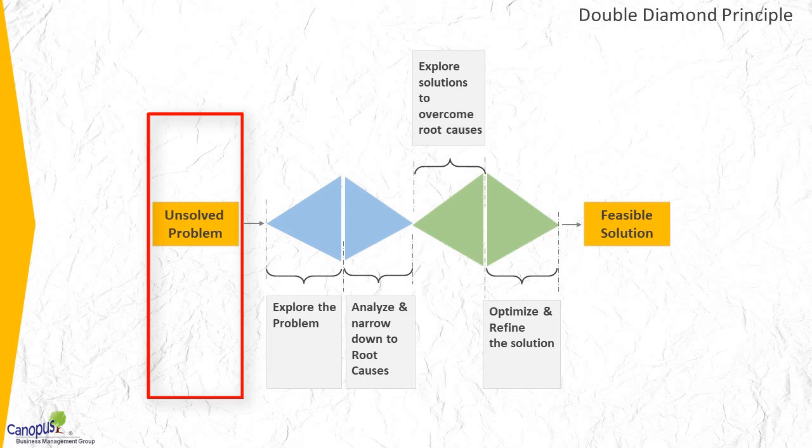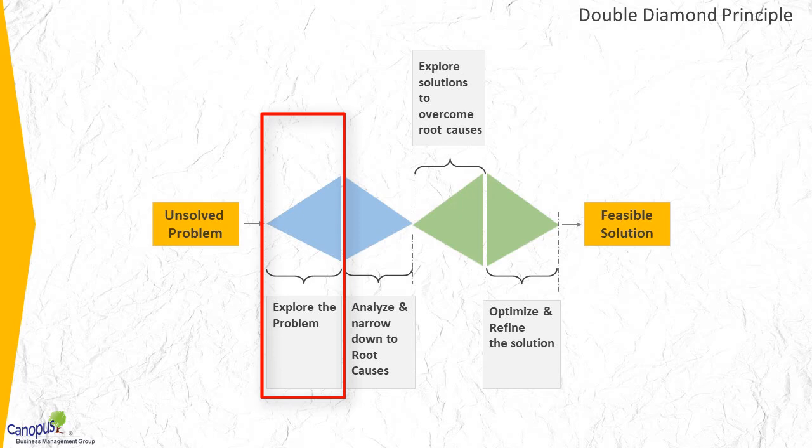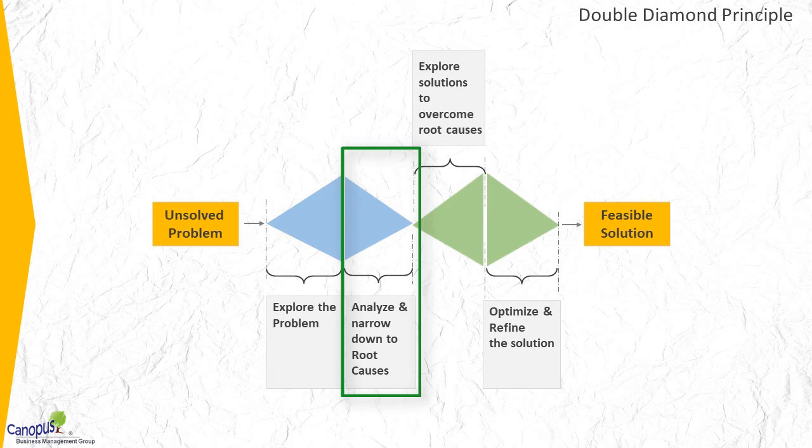We start with an unsolved problem. Here our focus is to define the problem, its scope, understand its impact on the business, etc. The next thing for us to do is to brainstorm and identify all possible reasons. We can use tools like the fishbone diagram or brainstorming tools which are widely used, like focus group discussions, interviews with customers, and a variety of other things to identify all possible reasons. Once we have identified all possible reasons, we use data or facts to filter and find out what really is the root cause of the problem, so we start narrowing down and converging.